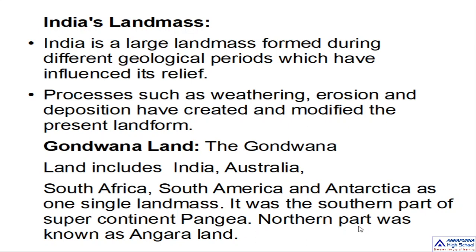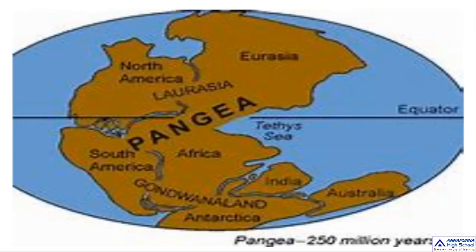Processes such as weathering, erosion, and deposition have created and modified the present landmass. In the beginning, we had only one continent — a supercontinent which is called Pangaea. Some millions and millions of years ago, we had a single landmass, a single continent, and that continent was known as Pangaea.